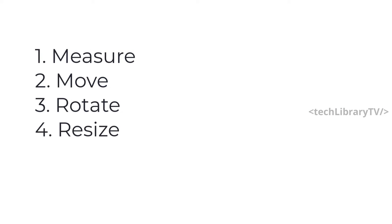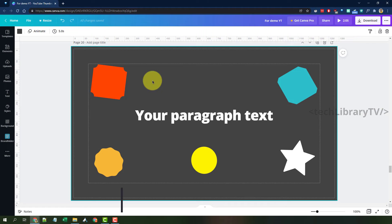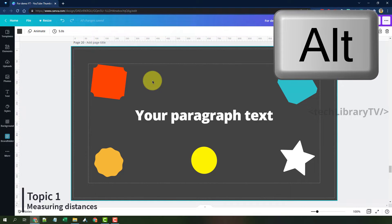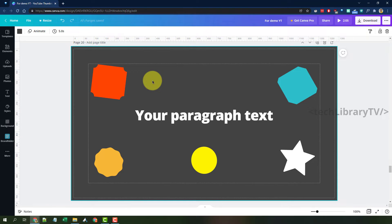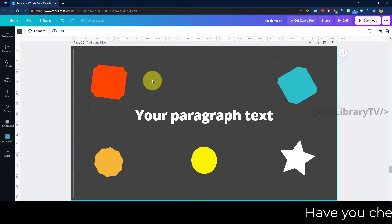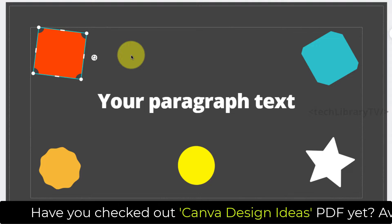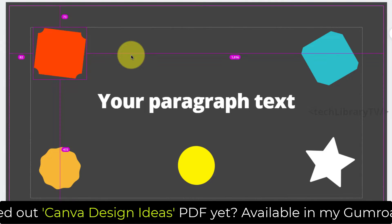Starting with measuring: when it comes to measuring, the Alt key is what we are going to use to show the measurement and guidelines for any element. You can see the distance between two elements, or an element's own distance within the canvas page layout. Whenever you have an element selected, just hit the Alt key on your keyboard.